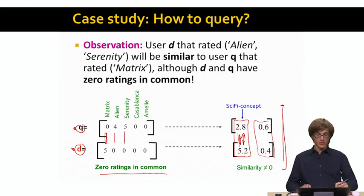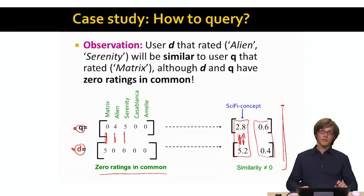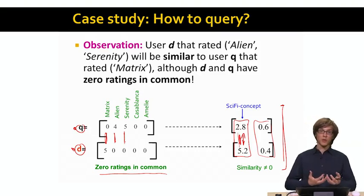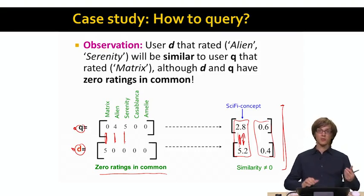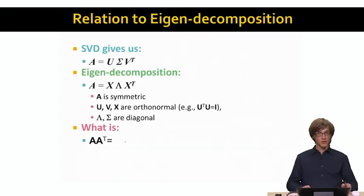Even though in the raw data representation Q and D don't share any coordinates, and even though Q and D have zero ratings in common, we are able to identify that they are similar. Because SVD was able to identify that people who like Alien and Serenity also like the Matrix movie. This is basically how we can make use of singular value decomposition.